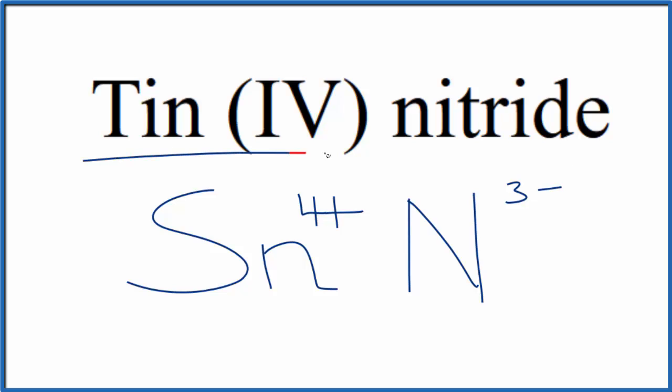Because we have this metal here, this is a transition metal, and then we have a nonmetal, we need to make sure these charges balance, that we have a net charge of 0.